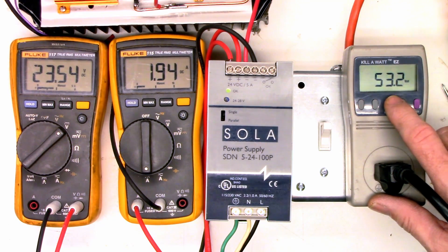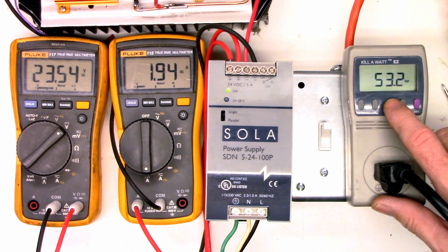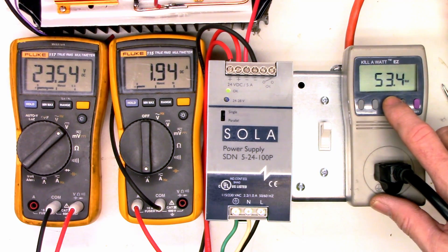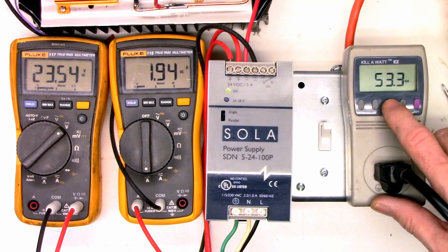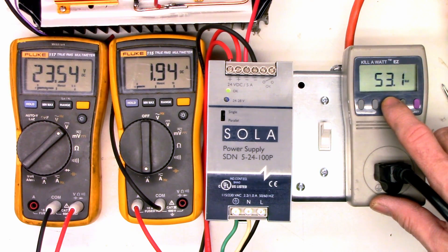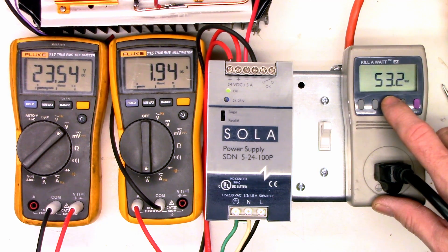Ideally, we would want to see a power factor of 1, and then the watts and the VA would be identical. The item would be using as much power as is being delivered to it. Power factor is whether the current leads or lags the voltage. A power factor of 1 is absolutely perfect. The current is perfectly in phase with the voltage.